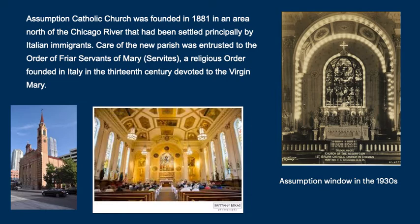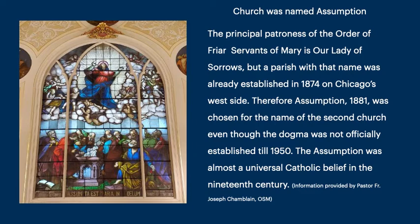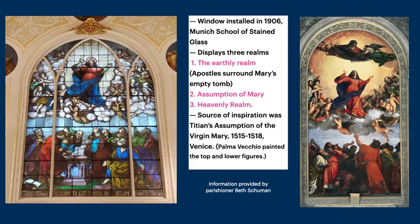To the right you see the Assumption window in the 1930s. Why was the church named Assumption? Well, the principal patroness of the Order is Our Lady of Sorrows, but a parish with that name was already established in 1874 in Chicago. Therefore, Assumption was picked in 1881, even though the dogma was not officially established until 1950 — but the belief in the Assumption was universal at that time in the 19th century. The window was installed in 1906 from the Munich School of Stained Glass. It displays three realms: the earthly realm with the apostles surrounding Mary's empty tomb, the Assumption of Mary, and finally the heavenly realm. The inspiration for the stained glass window came from Titian's Assumption of the Virgin Mary.